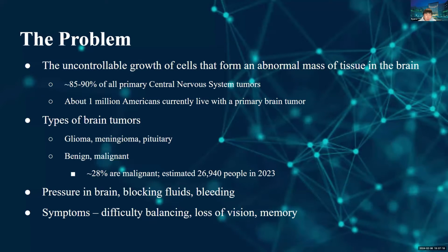The problem we're addressing is brain tumors, which are the uncontrollable growth of cells that form an abnormal mass of tissue in the brain. These brain tumors can appear in the glioma, meningioma, and pituitary areas, either being benign — non-cancerous — or malignant, being cancerous.